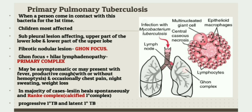Primary TB can be asymptomatic or may present with fever, productive cough with or without hemoptysis, and occasionally chest pain, night sweats, and weight loss. Hemoptysis is coughing up of blood. In the majority of cases, the lesion heals spontaneously.